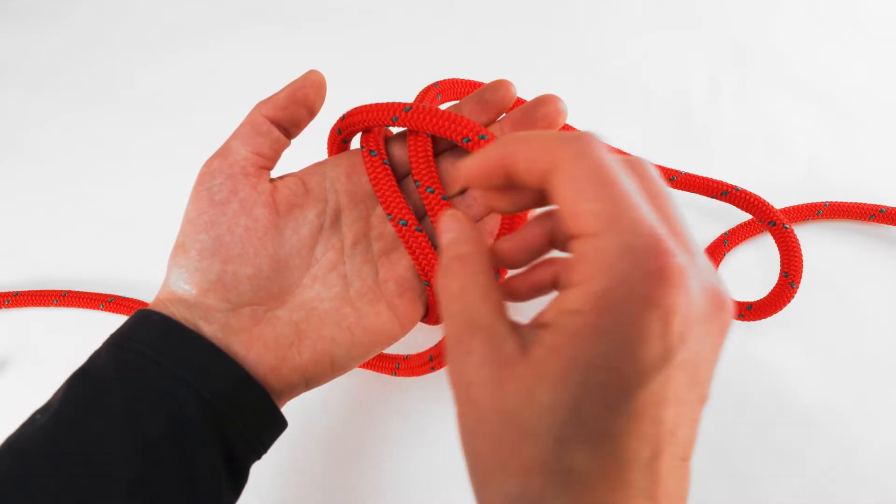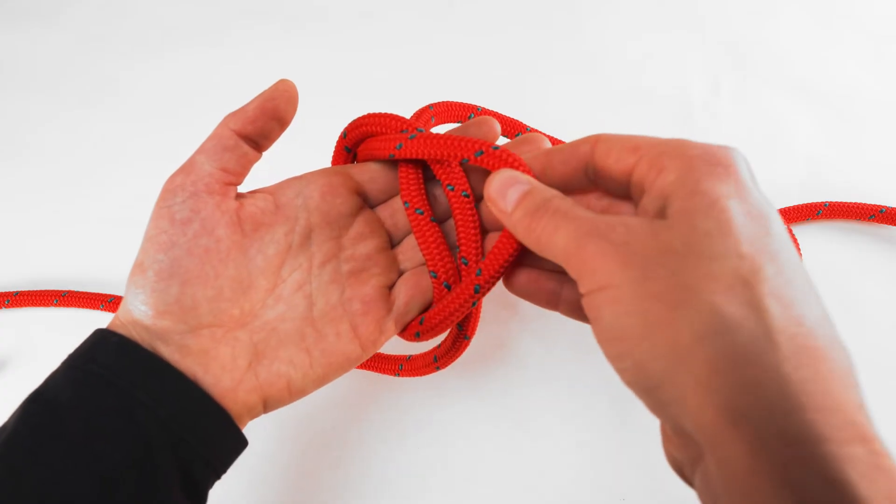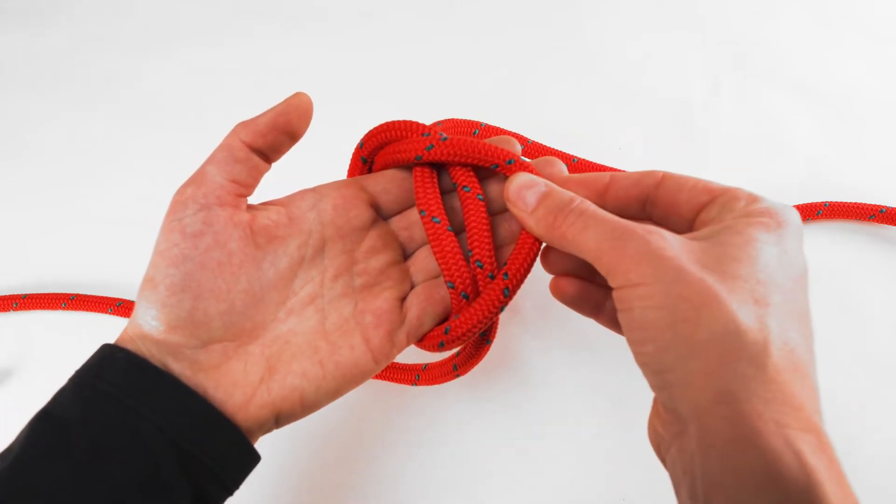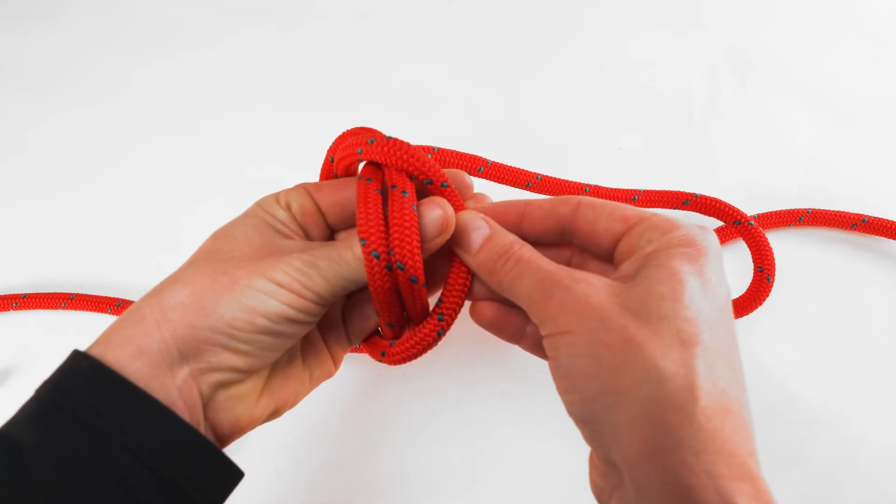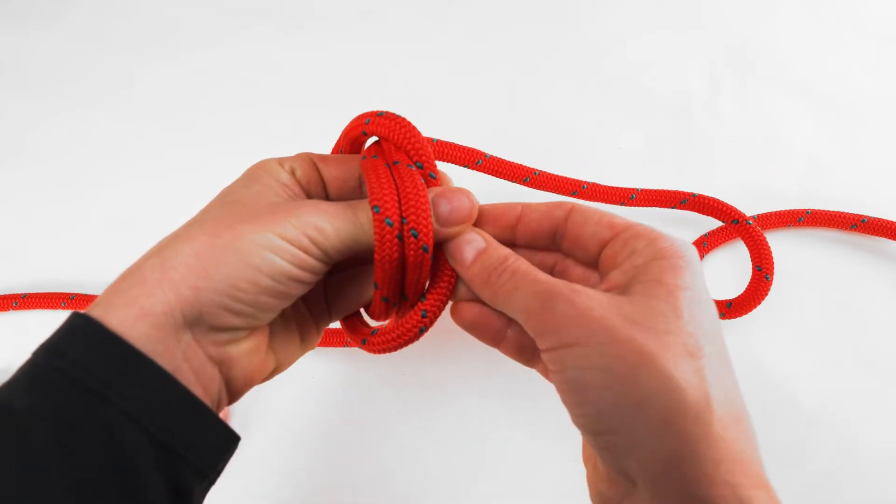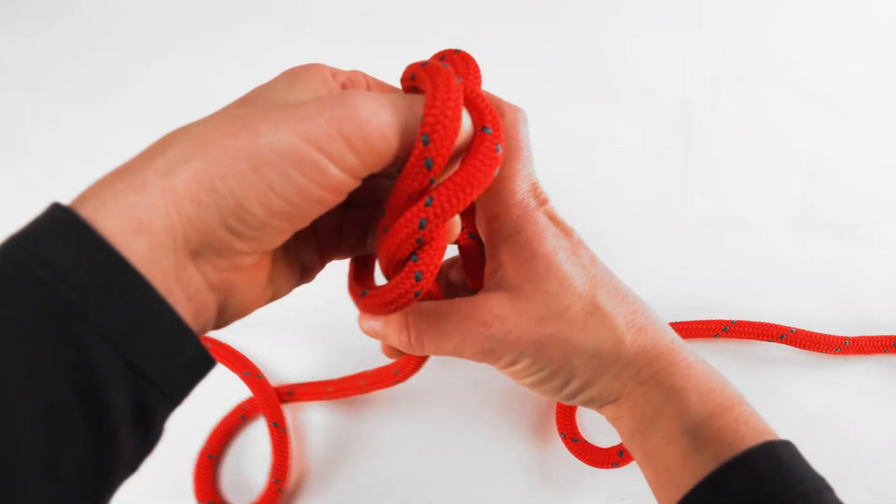Take the new strand that is nearest the thumb and move it to the fingertips, lifting it over the top of the other two strands. Slide the thumb underneath the strands and take hold of the furthest strand, the one that has just been placed there. Pull the hand out.